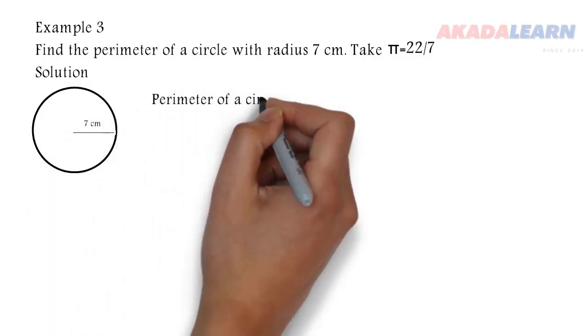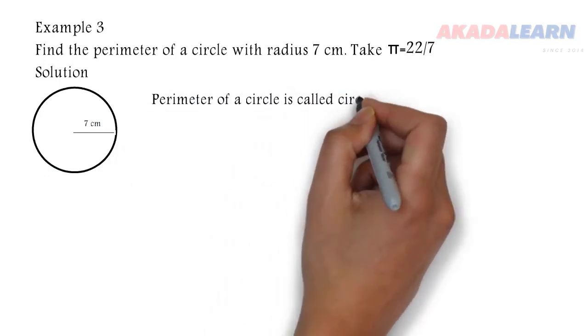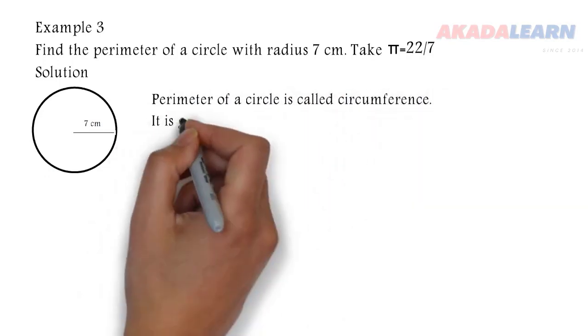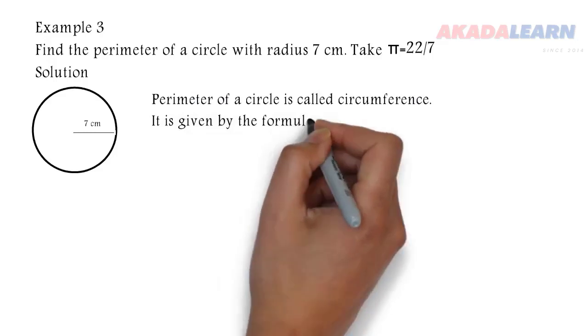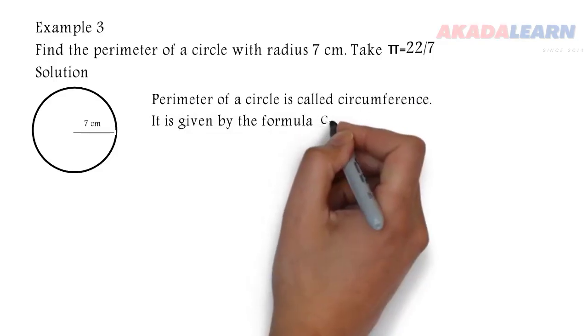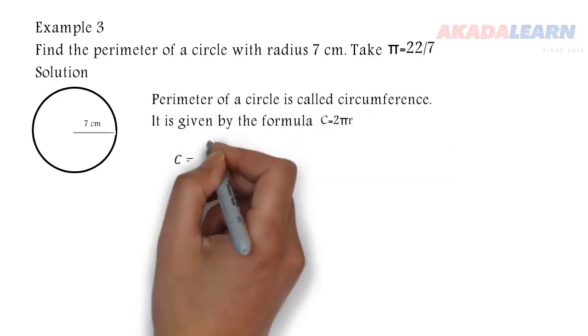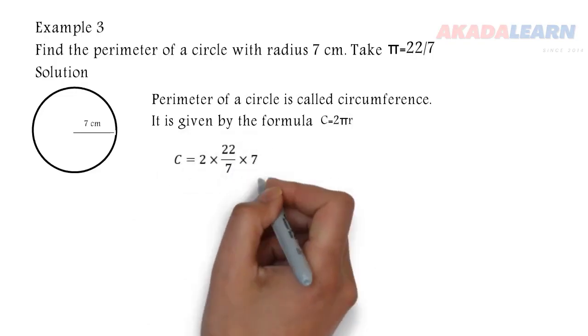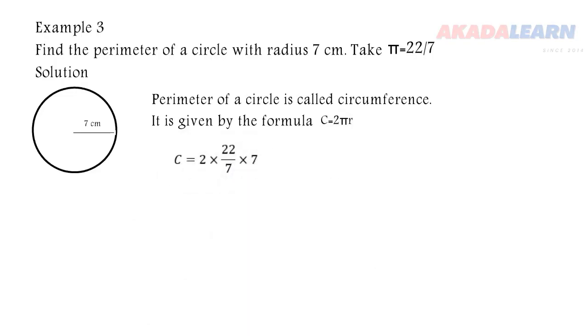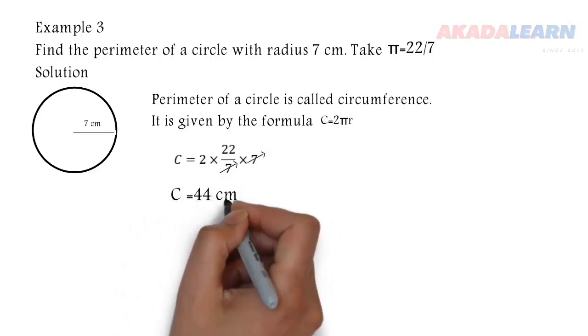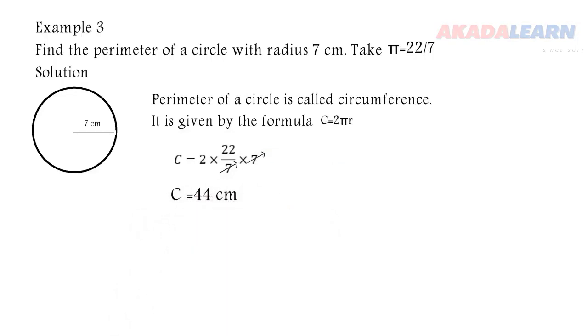Perimeter of the circle is also known as the circumference, and it is given by the formula C equals 2πr. C there is the circumference. So we are just going to substitute in. We have that our circumference is 2 times 22 over 7 times 7. Seven can cancel out 7, so we are left with 2 times 22, which is 44 centimeters. So the perimeter is 44 centimeters.